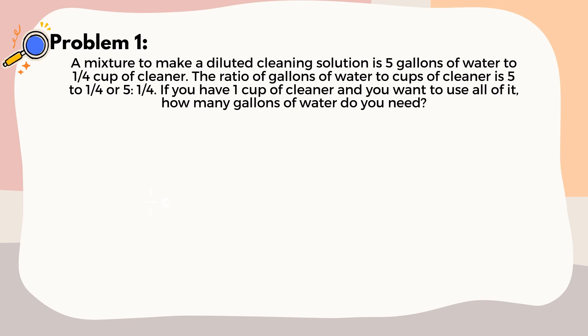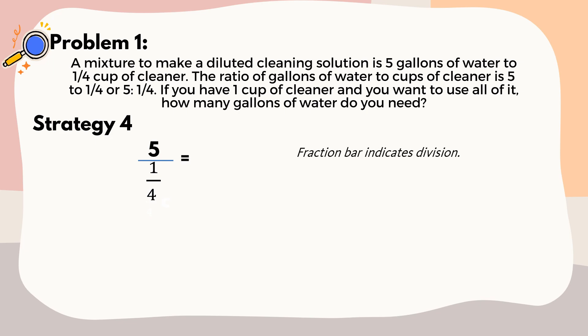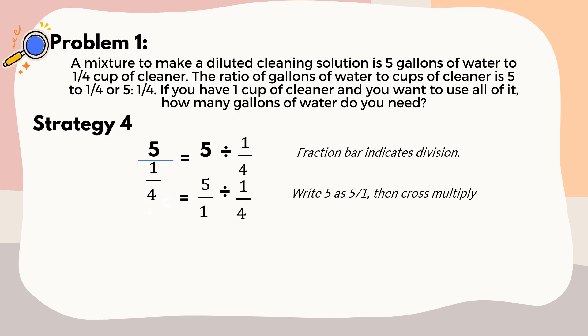Let's study the fourth strategy. In this strategy, we're going to divide five gallons of water by one-fourth cup of cleaner. Because the fraction bar indicates division, you can divide the numerator by the denominator to find the unit rate. So we have five divided by one-fourth. Write five as five over one, then perform cross multiplication. Five over one divided by one-fourth — cross multiply: five times four equals twenty, and one times one equals one. So our product is twenty over one, which equals twenty.